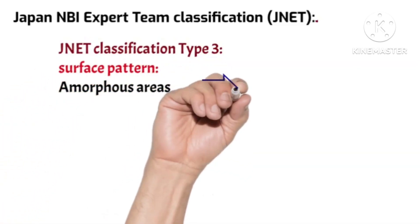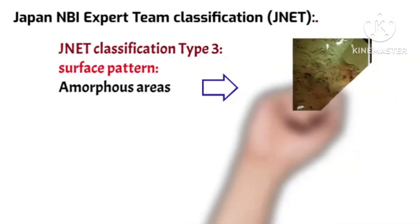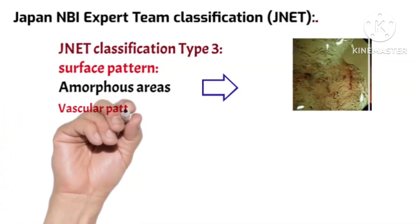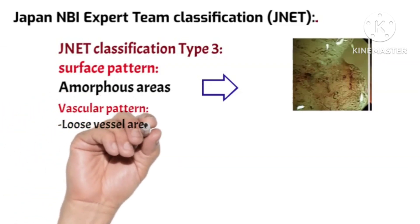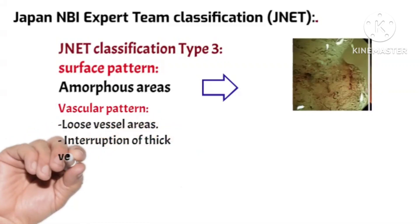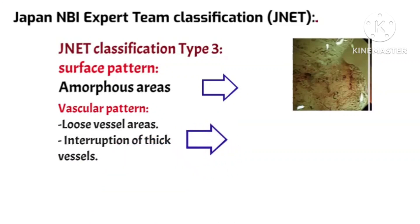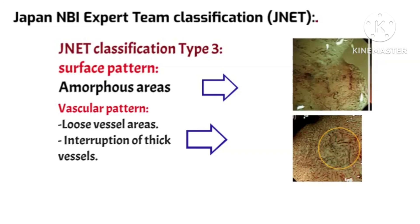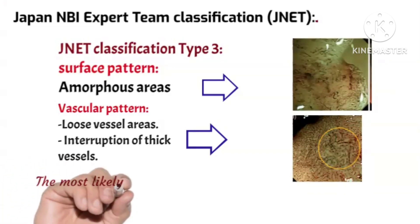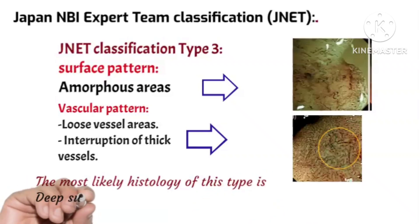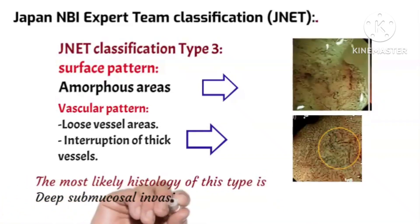JNET classification Type 3 shows a surface pattern with amorphous areas, and the vascular pattern shows loose vessel areas and interruption of thick vessels. The most likely histology of this type is deep submucosal invasive cancer.